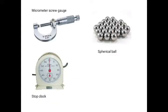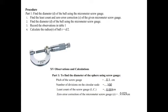The first part of the procedure is to find the diameter of the ball using the micrometer screw gauge.